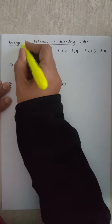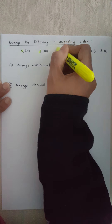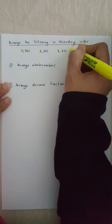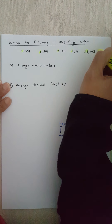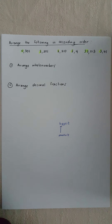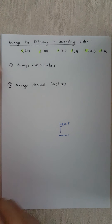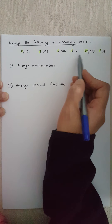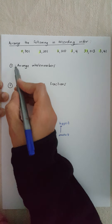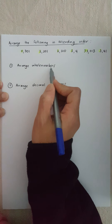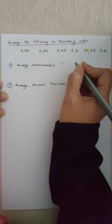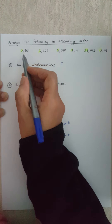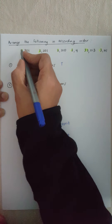First of all we look for our whole numbers. Before the comma is your whole number and after the comma is your decimal fraction. So here are all my whole numbers, and my first step is to arrange my whole numbers. So I want to go in ascending order — I'm looking for the smallest one.